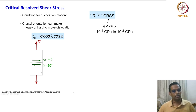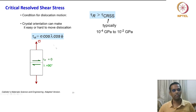Here you see a rectangular member subjected to force. If lambda equals 90 degrees, tau_r becomes 0 because the cos lambda component becomes 0 — the entire tau_r is zero in this orientation.